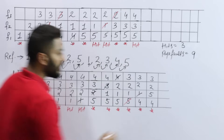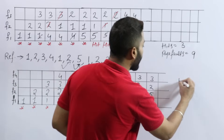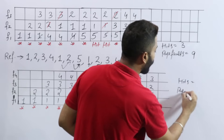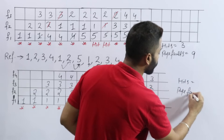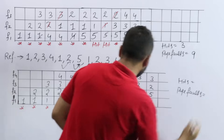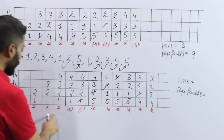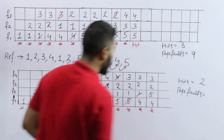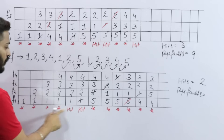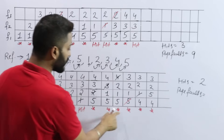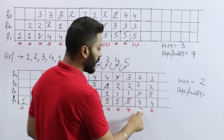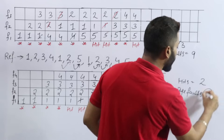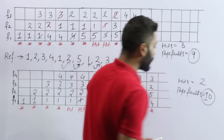Calculating results for 4 frames: number of hits = 2 and number of page faults = 10.